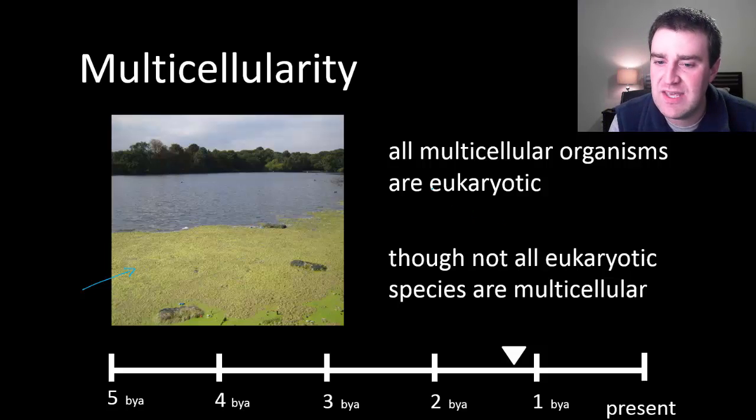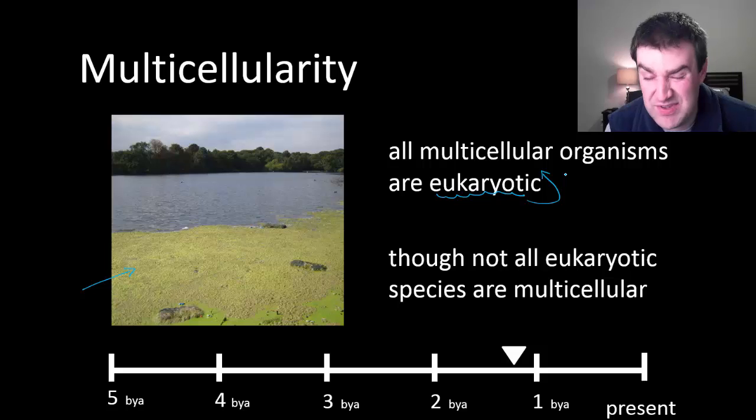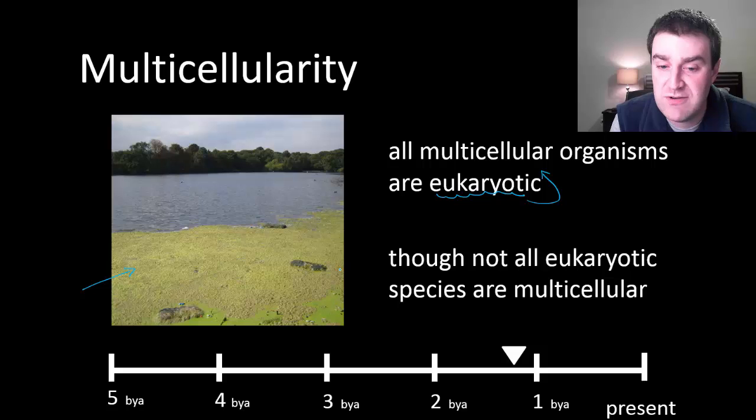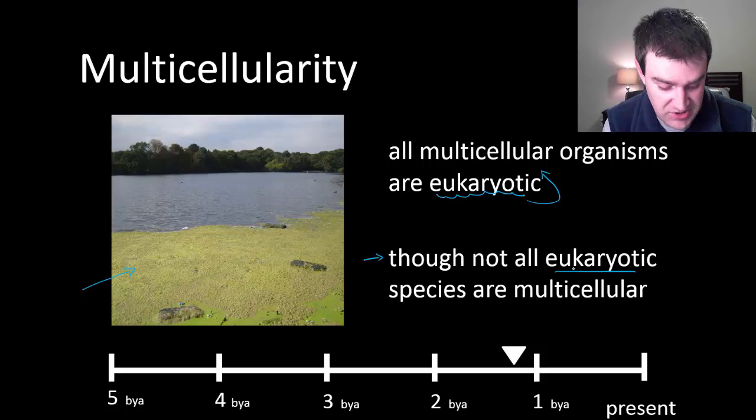All we know is that you have to be eukaryotic in order to possibly be multicellular. We don't know why. We've never really seen multicellular bacteria before. Although I don't want you to go too far with that - not everybody who is eukaryotic is multicellular today. There still are single-celled eukaryotic species like amoeba, like paramecia, like yeasts for example.